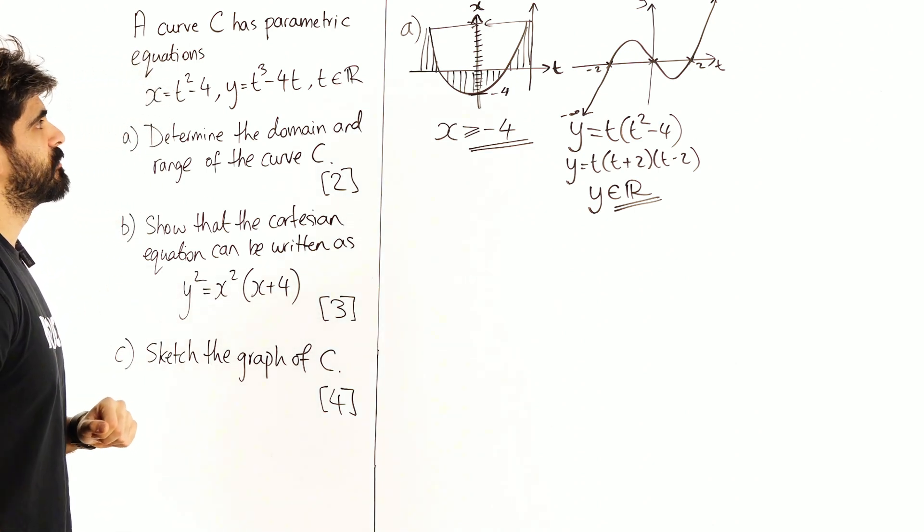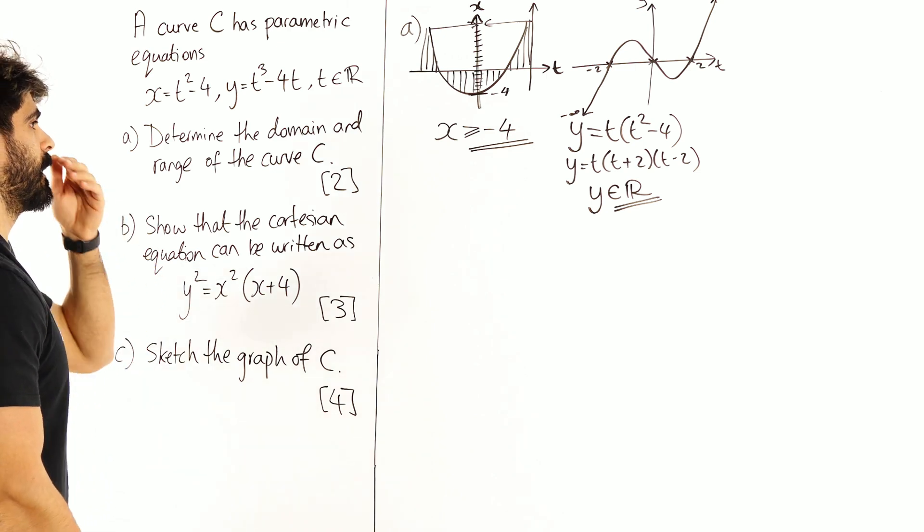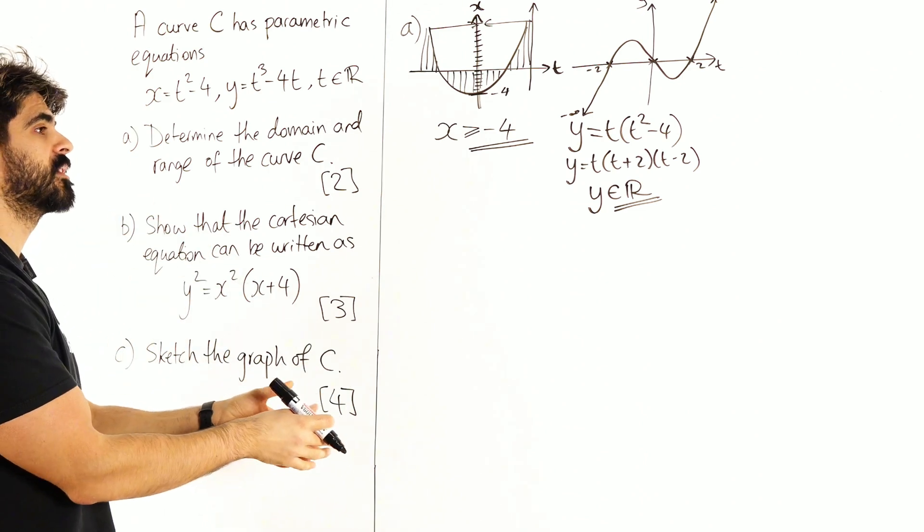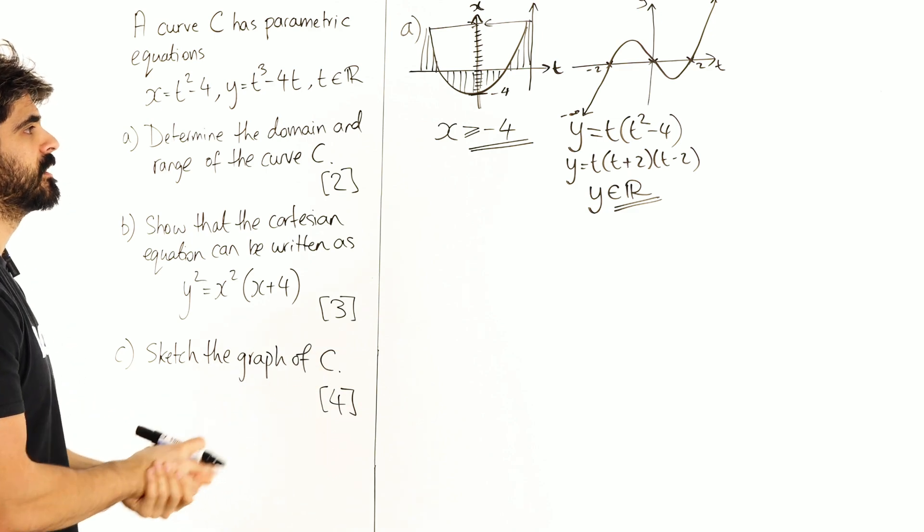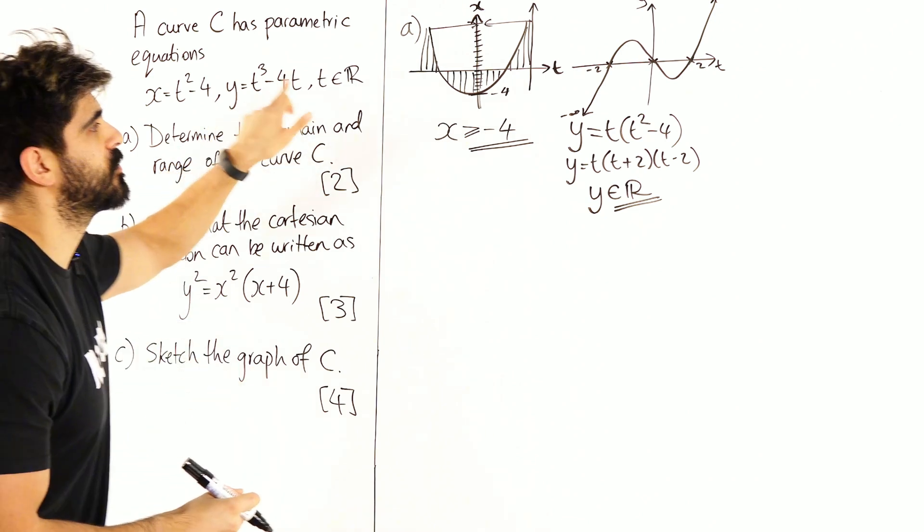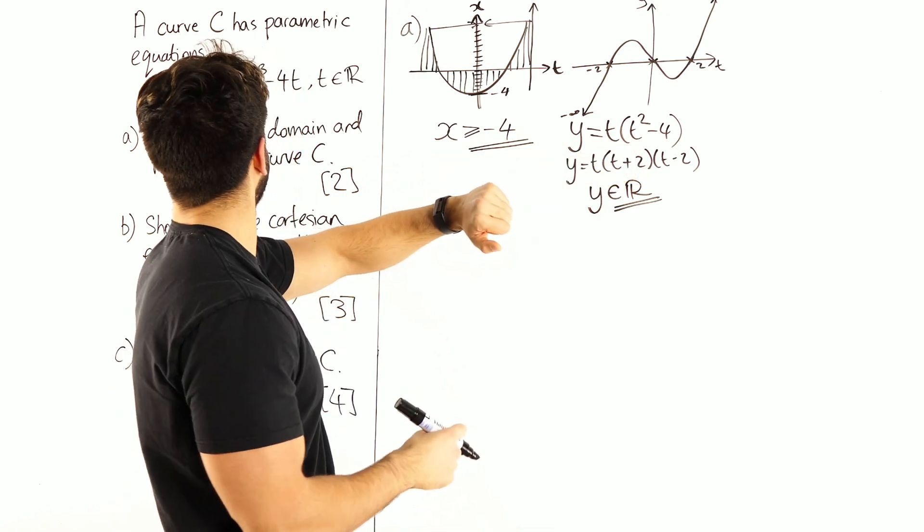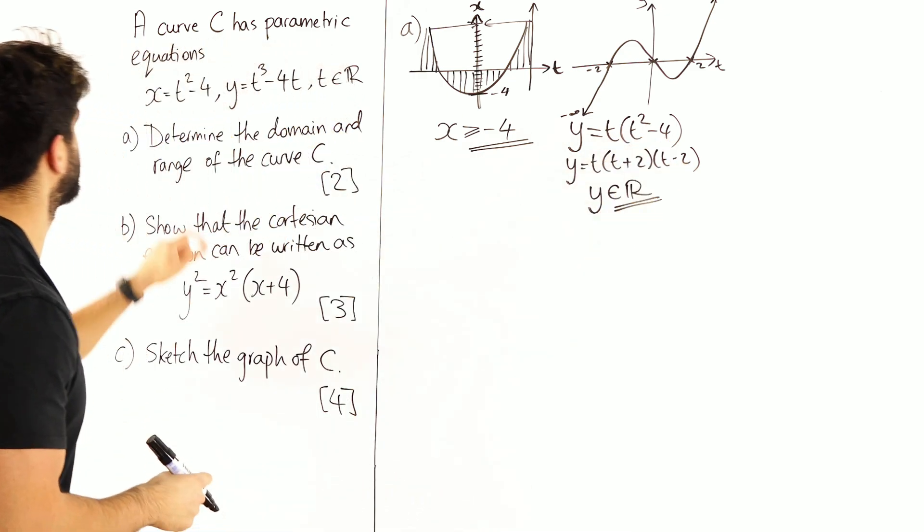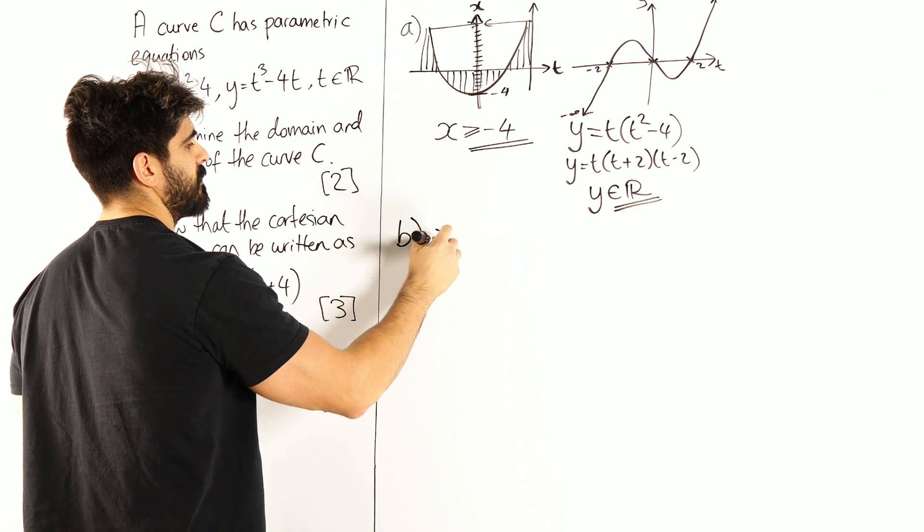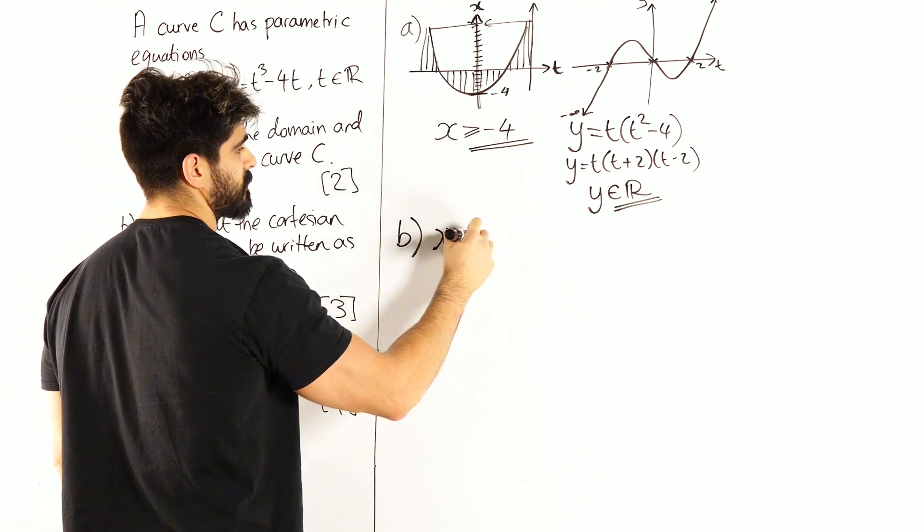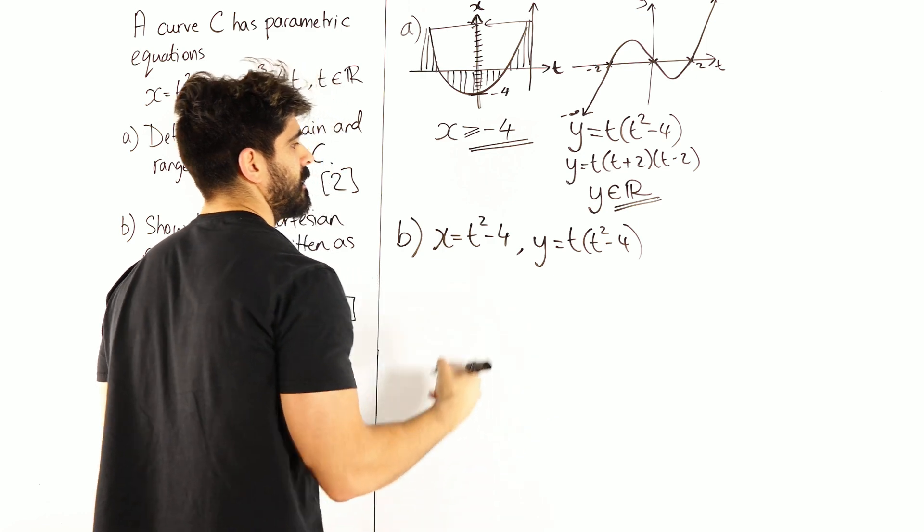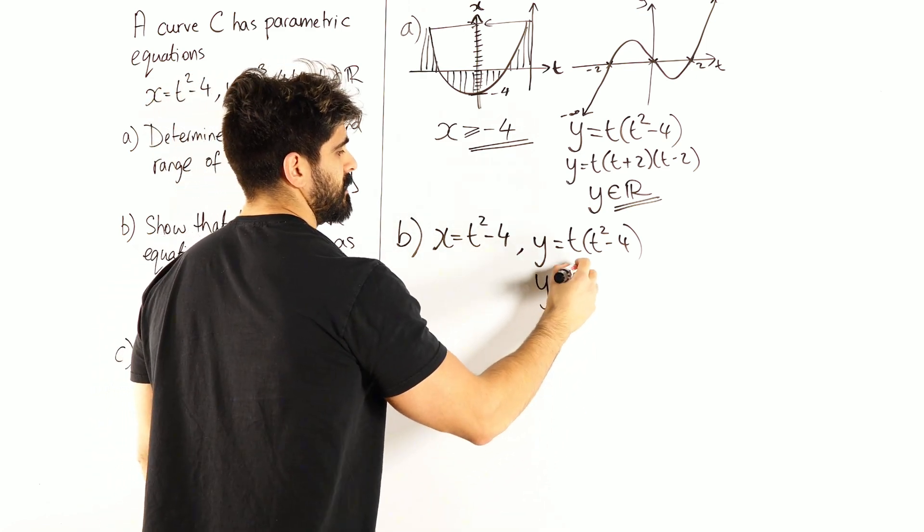Show that the Cartesian equation can be written like this. Now the way we do this is we usually rearrange one of the t values, and then make our substitution. Now the thing about this is that we have different powers. But as part of my working in part a, I notice that that t squared minus 4 is actually here, which is very convenient for me. So we have x equals t squared minus 4, and y I can rewrite like this.